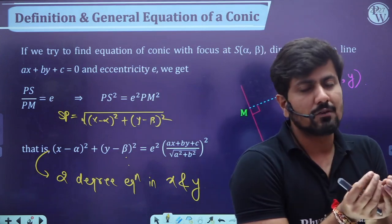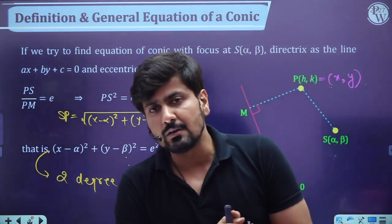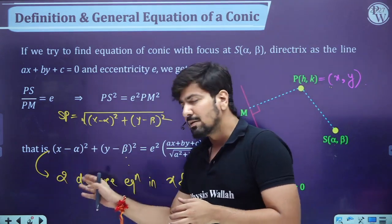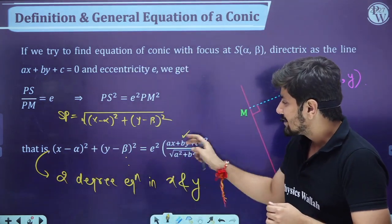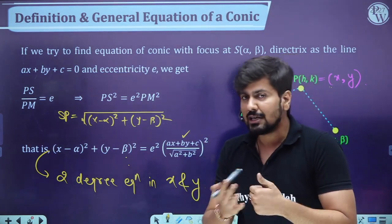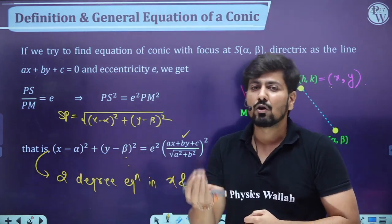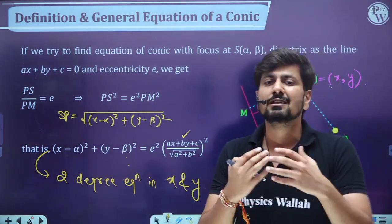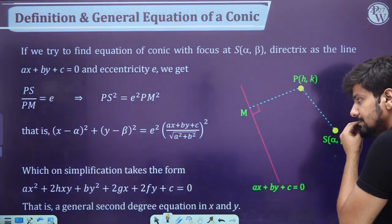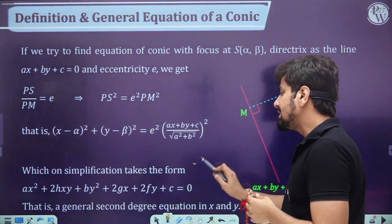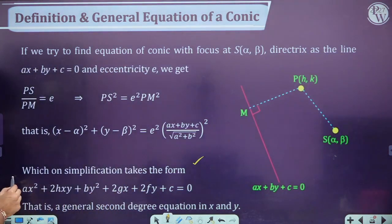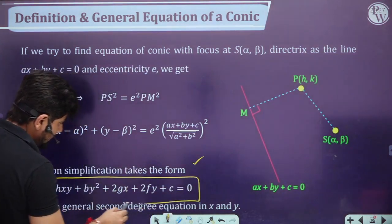This general two-degree equation has terms: x², xy, y², x, y, and a constant term. Which on simplification takes the form: Ax² + 2hxy + By² + 2gx + 2fy + c = 0, where A, h, B, g, f, c are all coefficients.